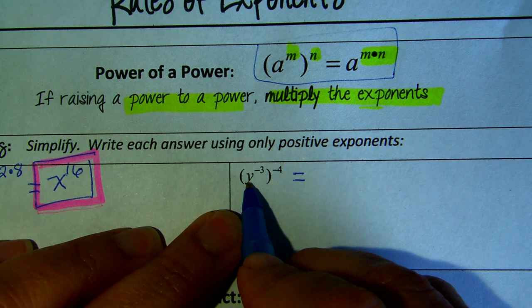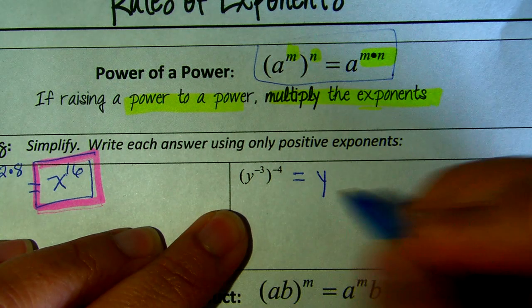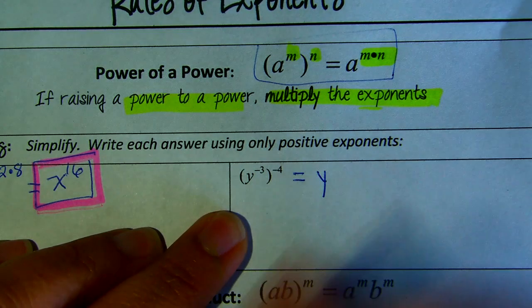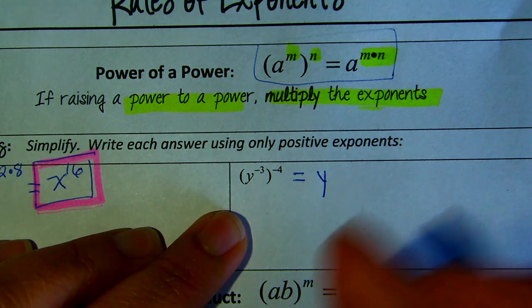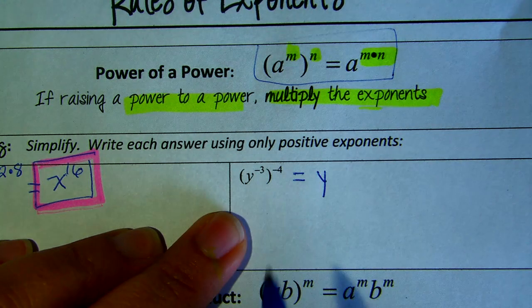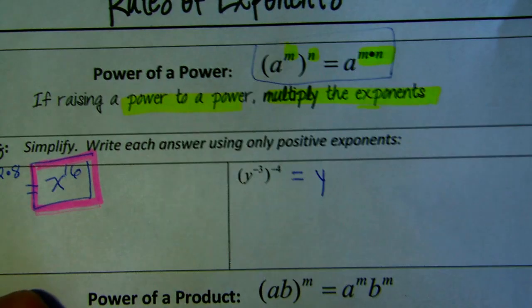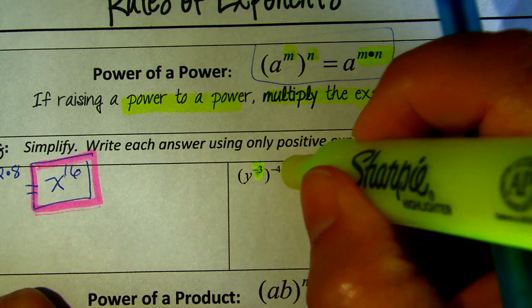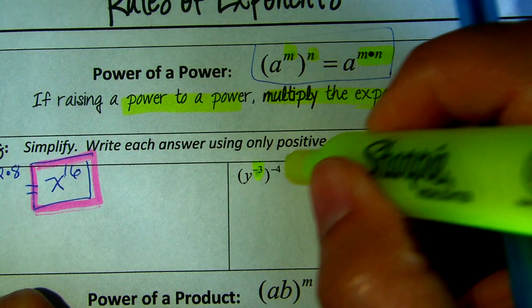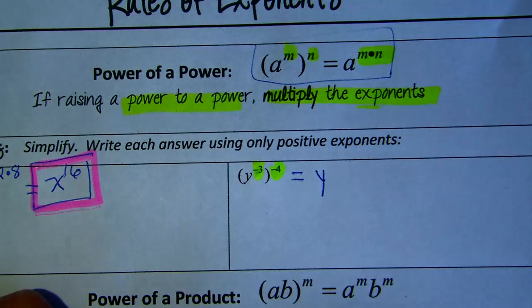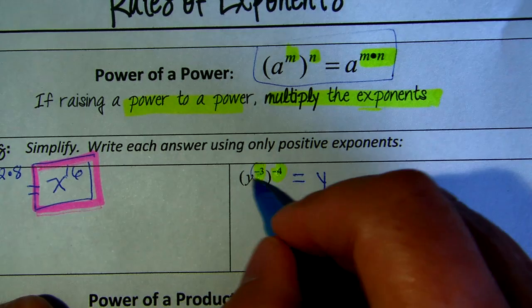This one, the base is the y. And of course, as we go on, we need to be applying all of the laws that we've already learned. So on this one, power to a power, you have negative 3 at the same time raised to a power of negative 4. So what do we do with these two?